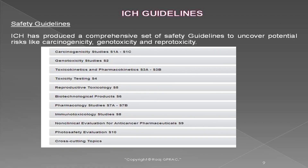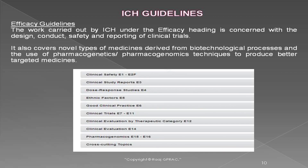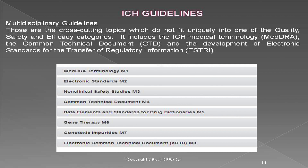There are also safety guidelines divided from S1A to S10, and efficacy guidelines divided from E1 to E16, of which E6 is very important as it covers good clinical practice. Then there are multidisciplinary guidelines, also very important — M4 talks about ICH CTD, M8 talks about ICH eCTD, and M7 talks about genotoxic impurities.